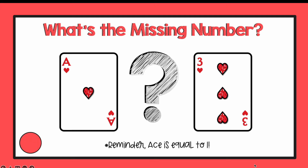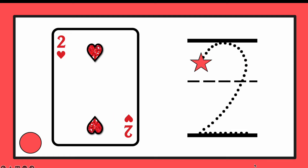What is the missing number? In this case, the ace is the same as the number 1. What is the missing number? You're going to write it next to the space that has the circle. The number that was missing was the number 2. Nice work.